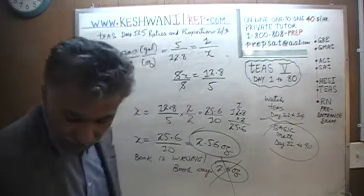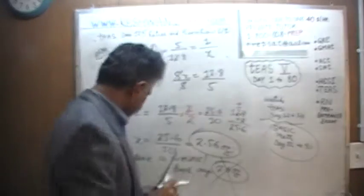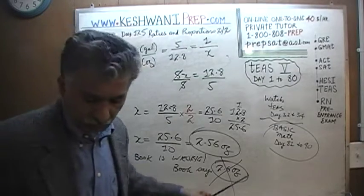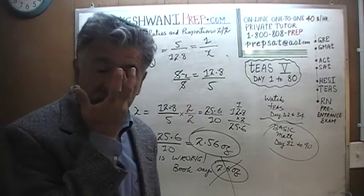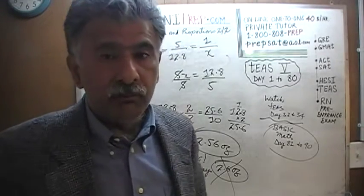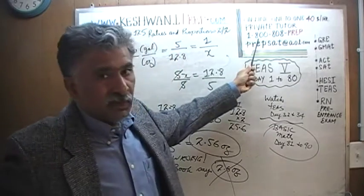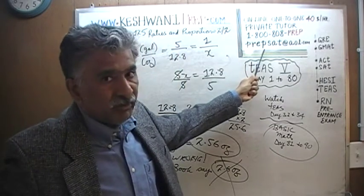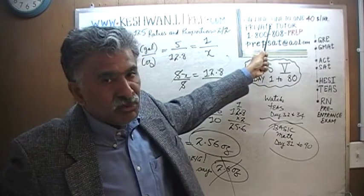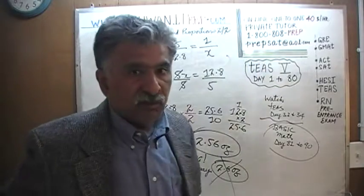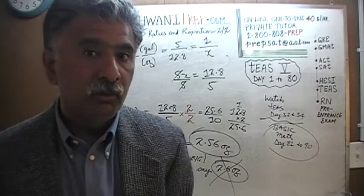This is the end of this lesson — we are just going to have two problems today, and we will start a new topic tomorrow. If you wish to work with me individually one-to-one and are looking for a tutor, you can reach me at 1-800-808-PREP or by email at prepsat.aol.com. We will work one-to-one, individual tutoring on Skype. My rate as of right now is $40 an hour. I will see you tomorrow.